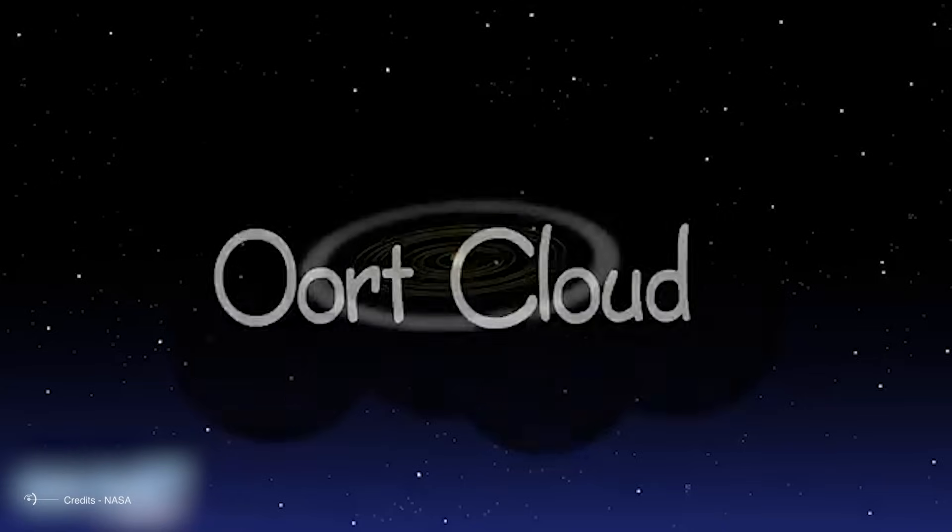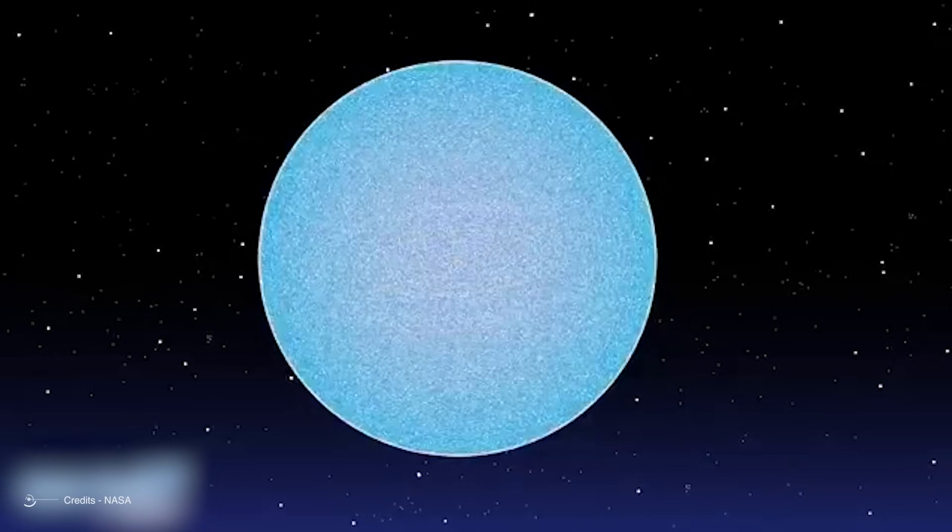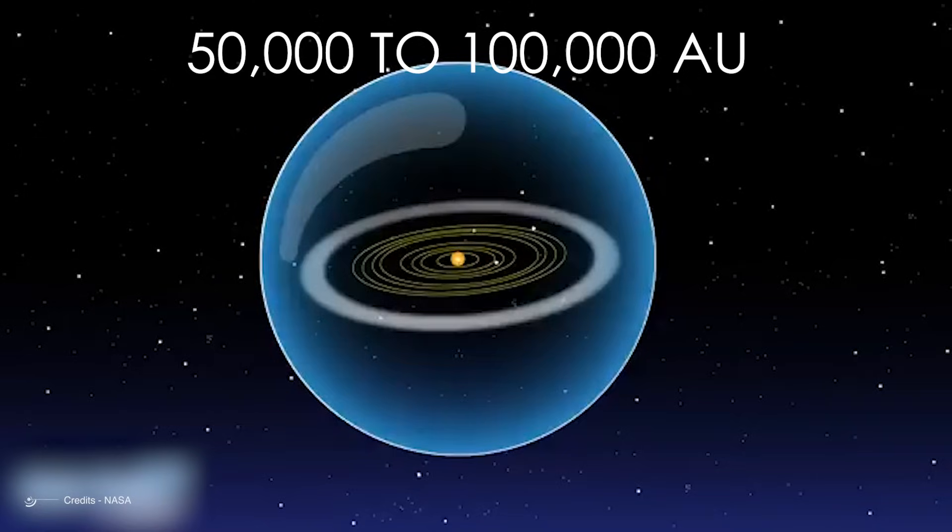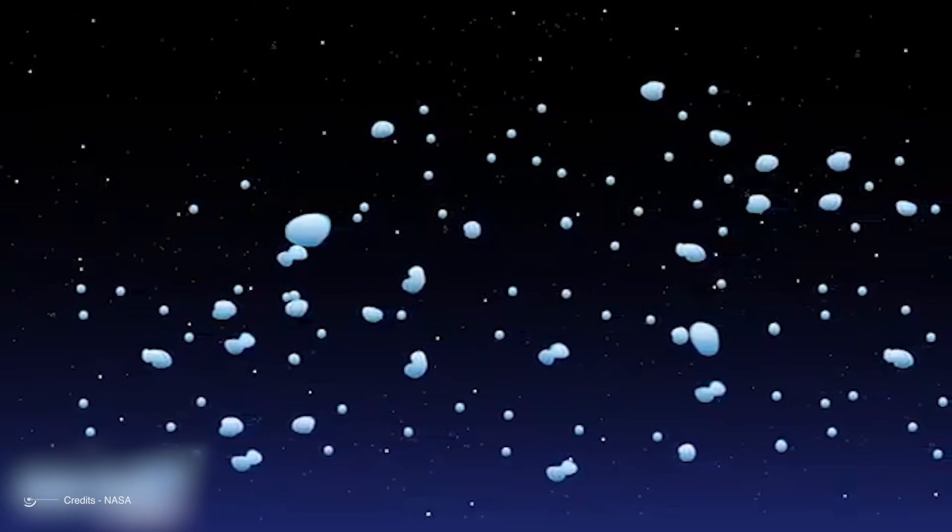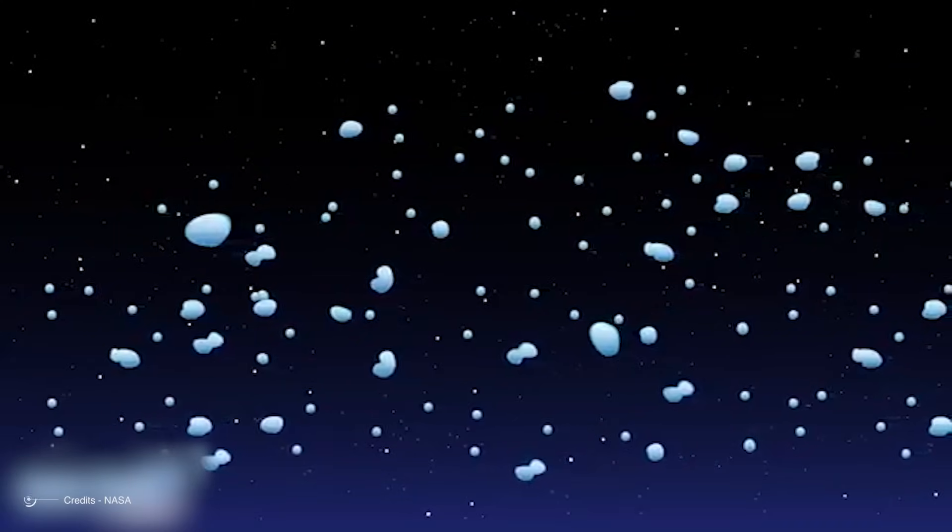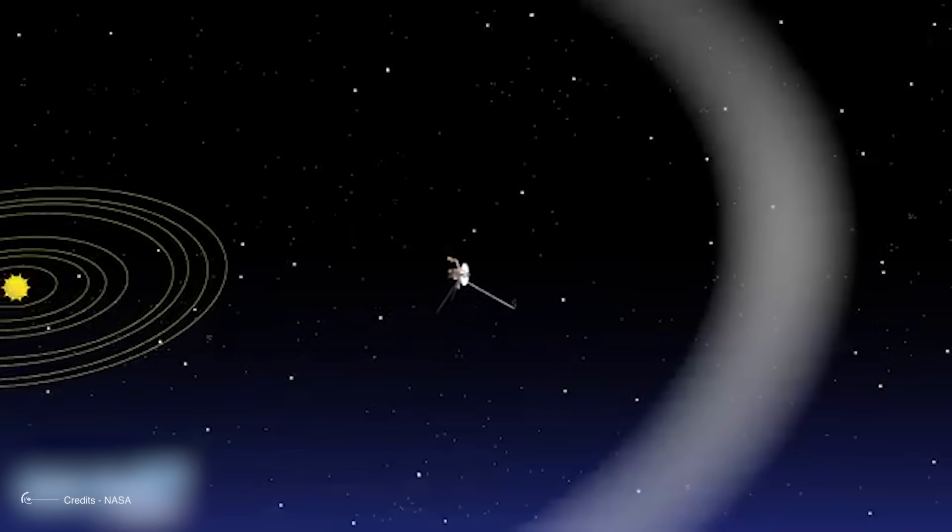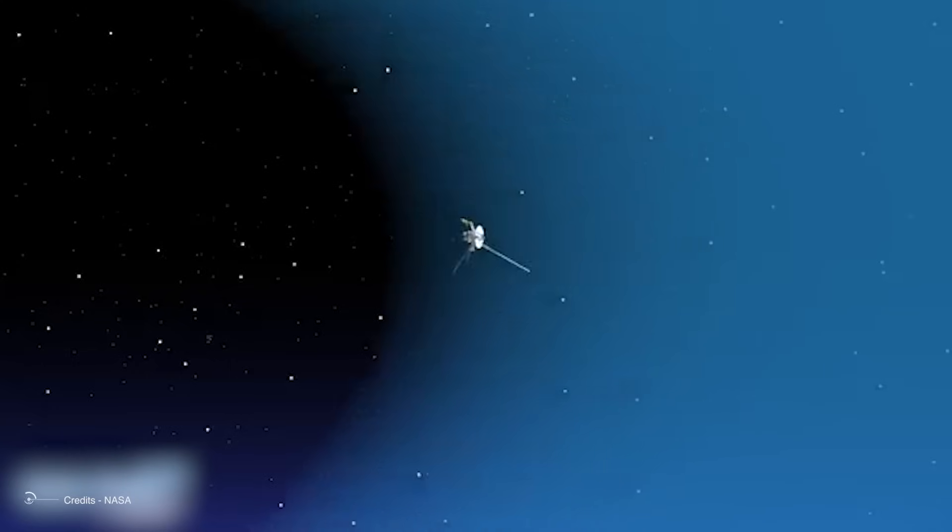Let's start with the Oort cloud, a massive spherical shell that completely surrounds our solar system in all directions. This isn't just some minor feature—it extends between 50,000 to 100,000 astronomical units from the sun in every direction. For perspective, that's nearly two light years, almost halfway to the nearest star. Yet somehow, this structure that dwarfs the planetary system by orders of magnitude barely gets mentioned in conventional astronomy education. Why is something so fundamentally important to understanding our cosmic neighborhood so consistently downplayed?